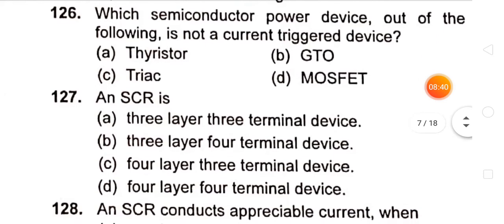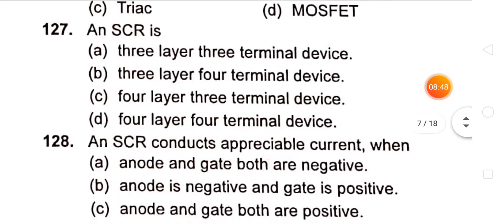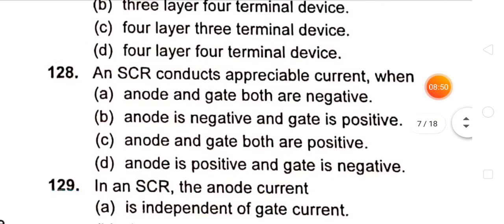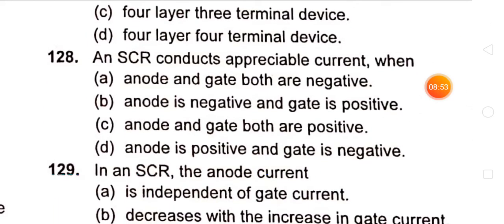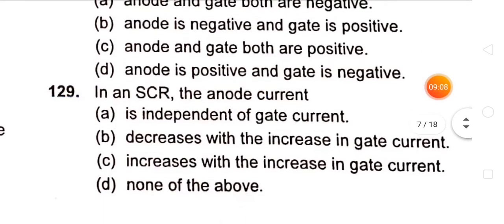MOSFET is not a current triggered device, and SCR is a four layer, three terminal device. An SCR conducts appreciable current when anode and gate both are positive. In an SCR, the anode current is independent of gate current.